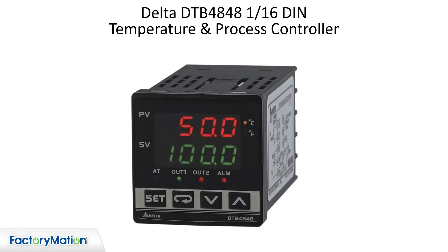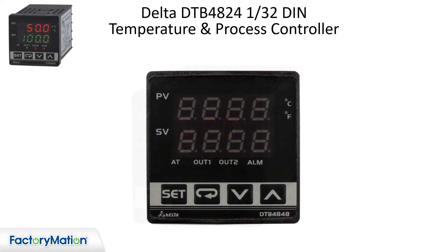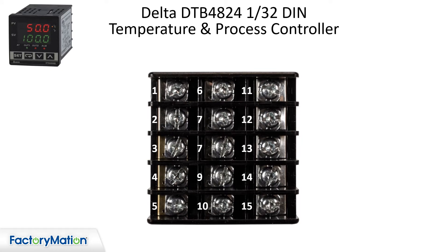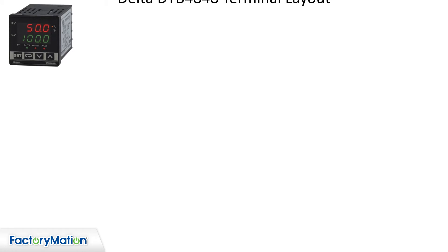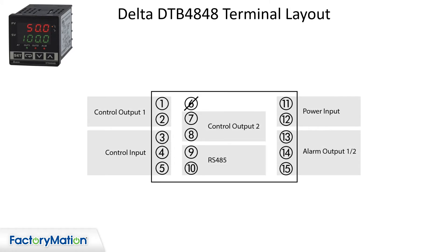The Delta DTB4848 is a 1/16th DIN temperature and process controller. This back view of the controller shows the terminal connections. The terminal layout diagram shows the input power, control inputs, and outputs.